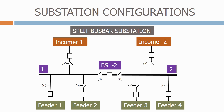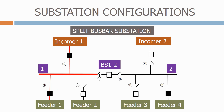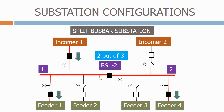One solution is a split bus bar substation. To give more security we add another incomer as an alternative source of supply, and a bus section circuit breaker so that if one bus bar is out of service we can still supply some of the feeders. The normal configuration when both incomers are available is for each incomer to feed its own bus bar with the bus section breaker open. If we lose one incomer, we close the bus section isolators before closing the bus section circuit breaker to energise the dead bus bar. This arrangement is also called a 2-out-of-3 system, where the normal operation is to have two of the three circuit breakers closed at any one time.